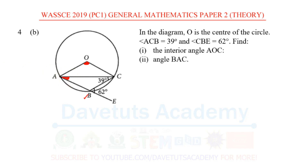Now, how do we get these two angles that we are asked to find from this particular question? We are going to be using the circle theorems, looking at means of applying the theorems to help us solve this particular question.